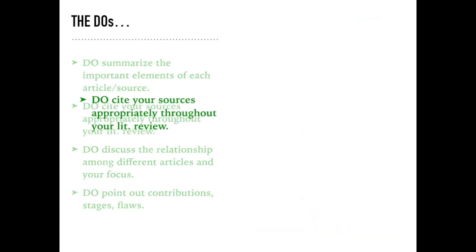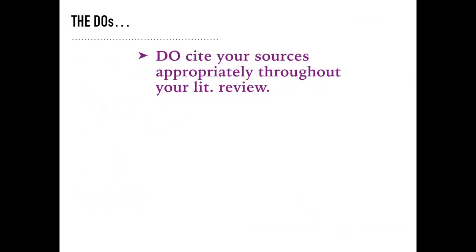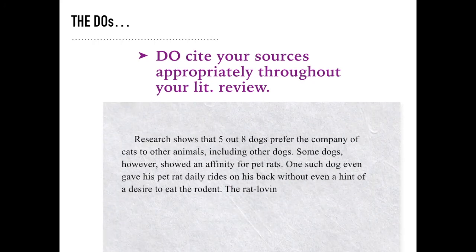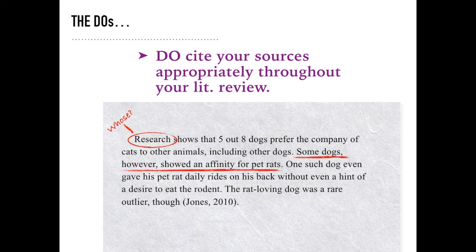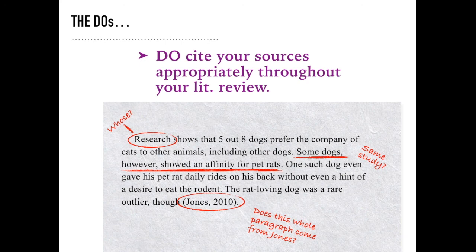Let's take a closer look at how you incorporate information and cite it in your review. Sometimes students take one study, summarize everything in it, then drop its citation at the end of the paragraph. The APA strongly discourages this approach because it can lead to a lot of confusion. Look at this example: the writer starts with a vague reference to research — but whose research is it? The second sentence has no citation at all, and because we're not sure who composed the research in the preceding sentence, we're not sure it's even the same study. We don't even get a citation until the very end of the paragraph, and we have to wonder if the whole paragraph belongs to Jones or somebody else.